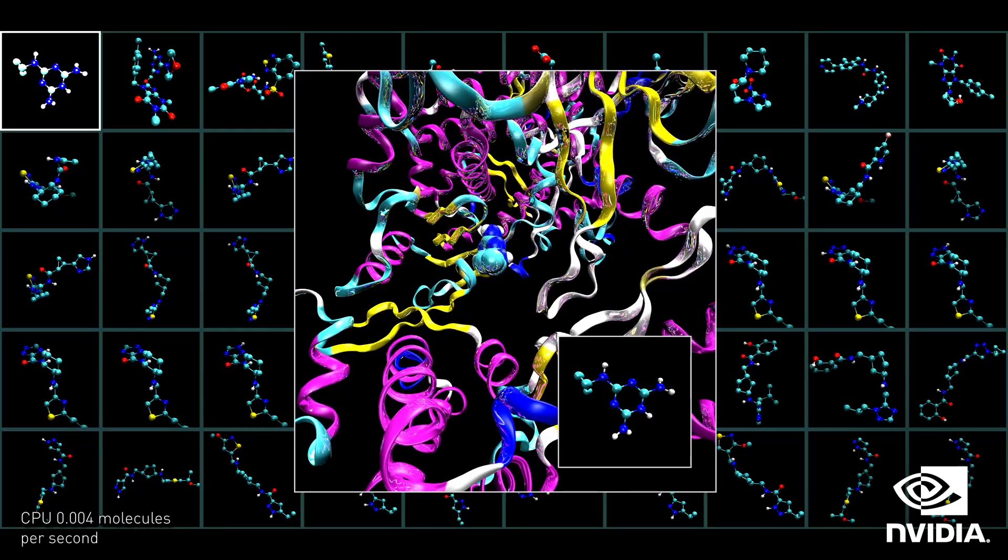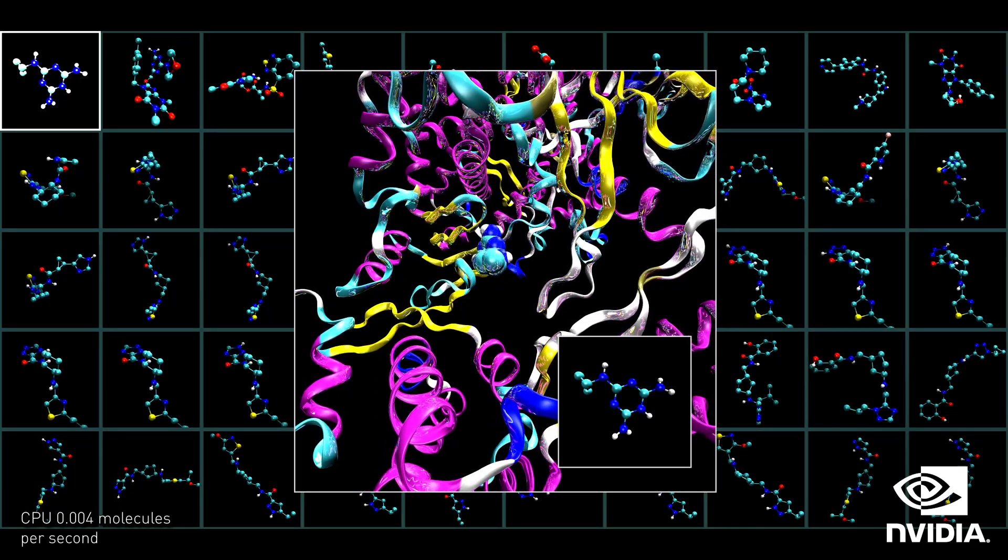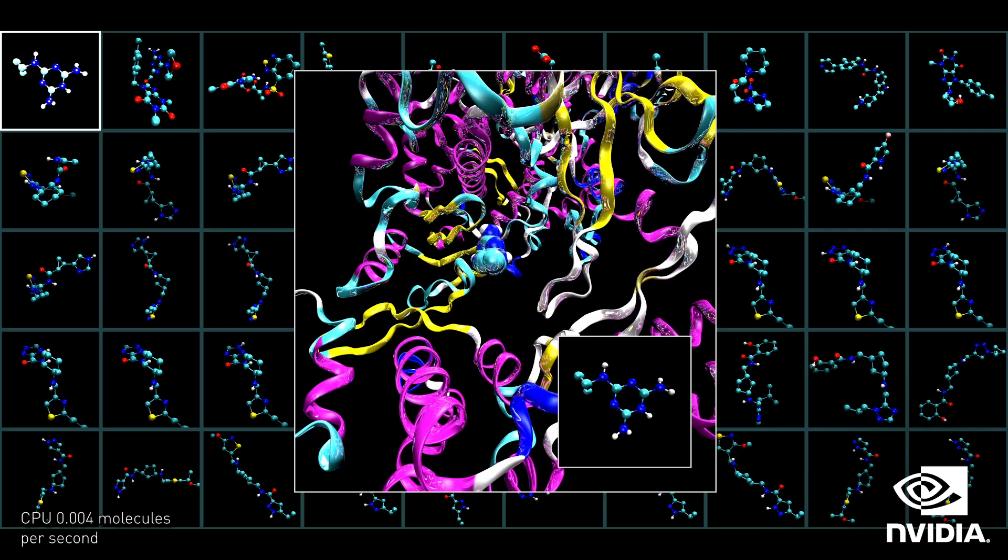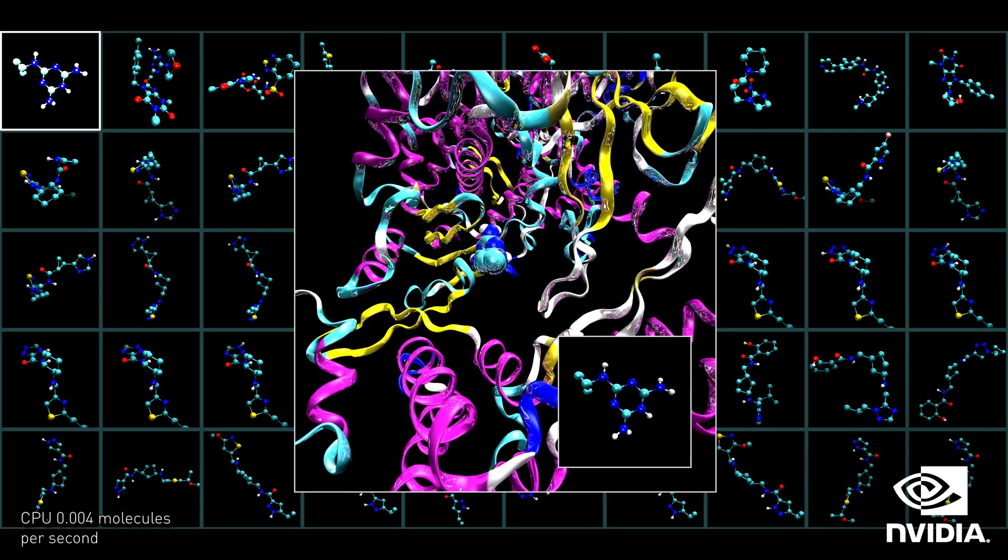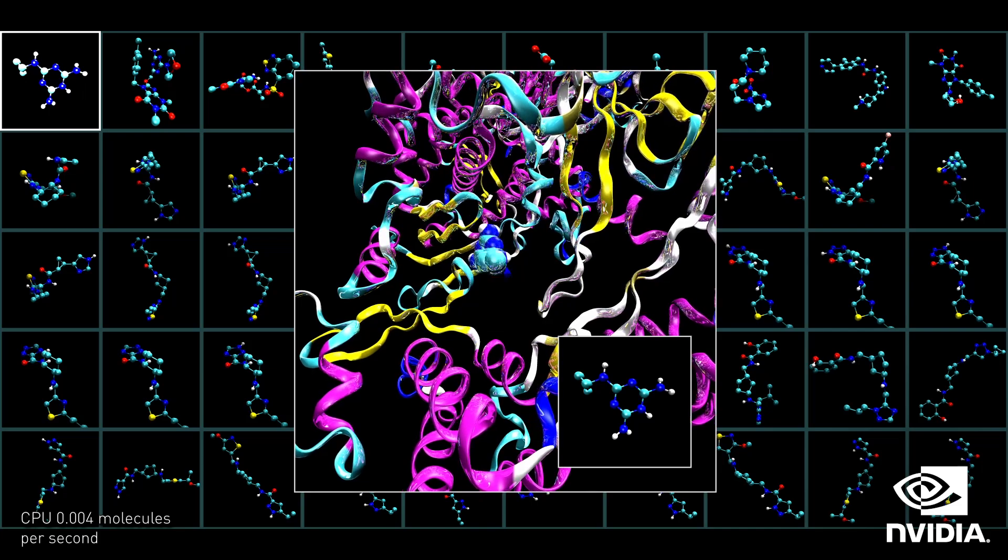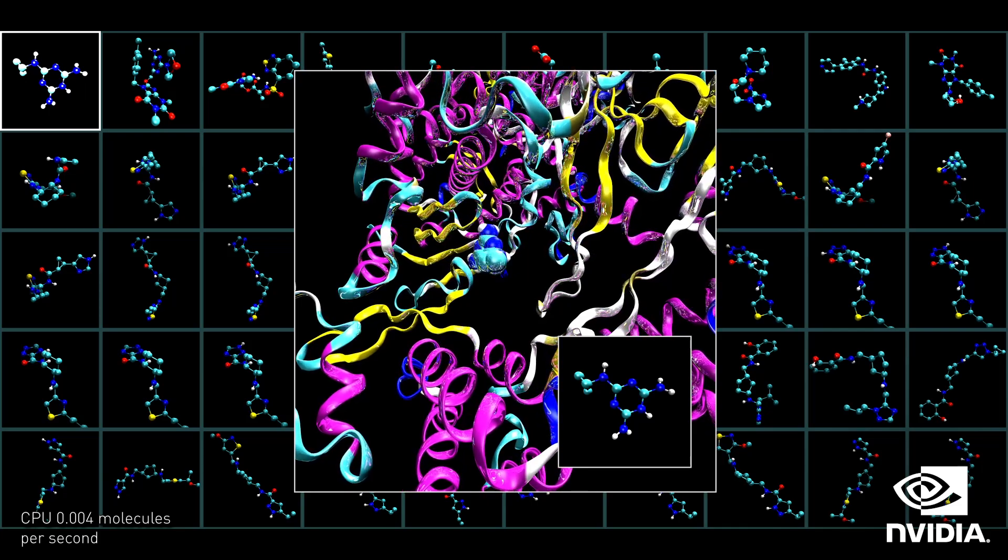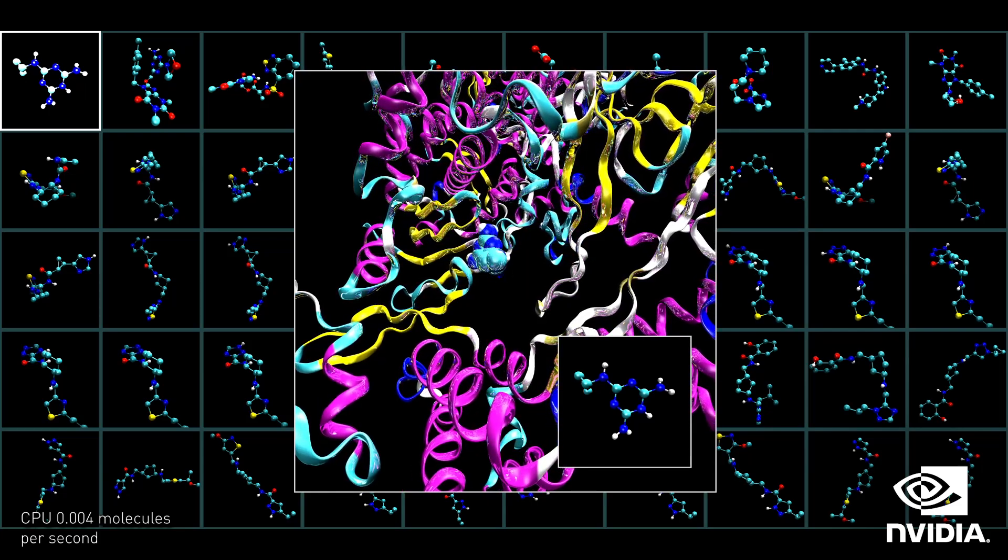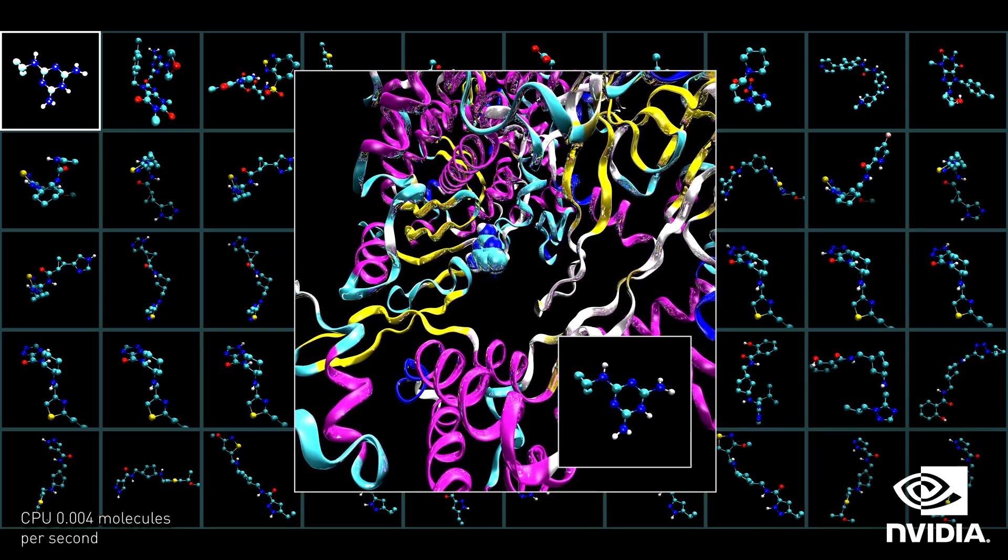daunting. Even the largest chemical databases, which contain billions of compounds, only represent a tiny fraction of the number of possible small molecules, any one of which may hold the cure. This means scientists must screen billions of molecules searching for just the right activity.